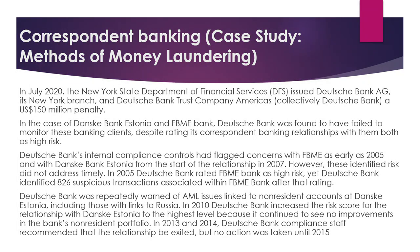Let's understand this with a case study. In July 2020, the New York State Department of Financial Services (DFS) issued Dosh Bank AG, its New York branch, and Dosh Bank Trust Company Americas, collectively Dosh Bank, a $150 million penalty. Dosh Bank's internal compliance controls had flagged concerns with FBME as early as 2005 and with Danska Bank Estonia from the start of the relationship in 2007; however, these identified risks were not addressed in a timely manner. In 2005, Dosh Bank rated FBME Bank as high risk, and yet identified 826 suspicious transactions associated with FBME Bank after that rating.